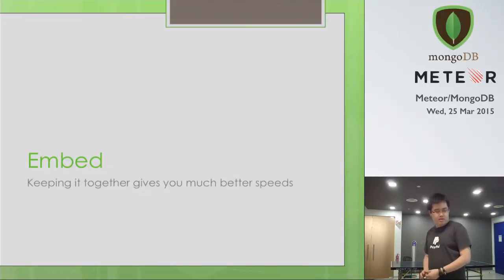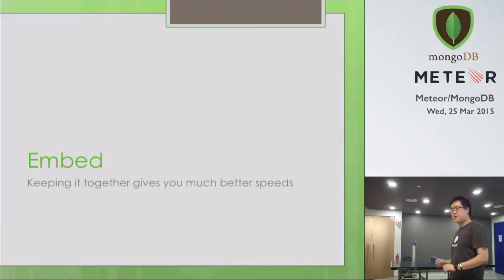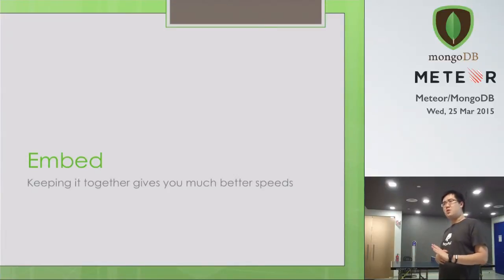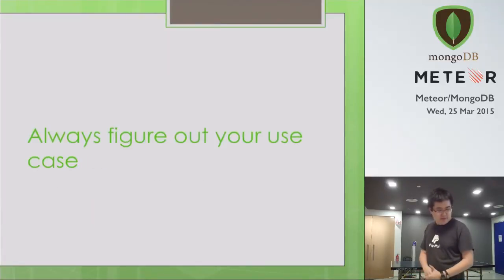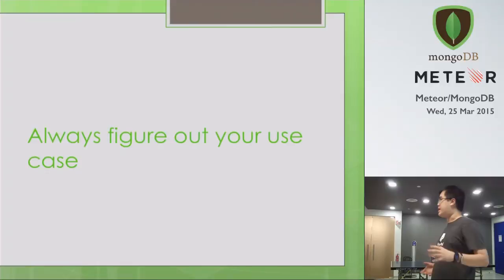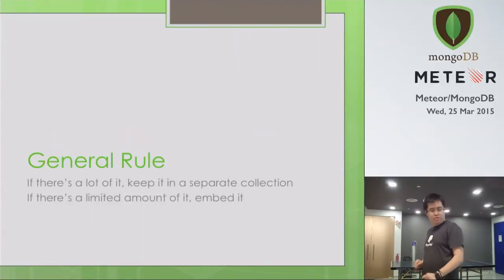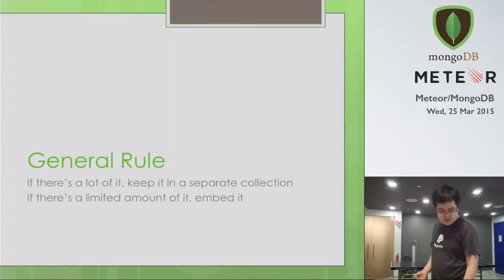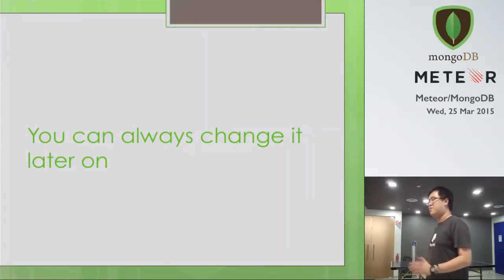On the other hand, if you use embedding, it gives you much better speeds when you query for data because you get a whole chunk out in one shot. One thing people mention about embedding being bad is: what if you have so many comments that it's more than 16 megabytes? My response to that is always that the whole of one of Shakespeare's longest works is five megabytes, so text is not a lot of data. Always figure out your use case: if you're going to grab the data individually a lot, use references. If you're going to grab the data as a whole all the time, use embedding. And the great thing about MongoDB is you can always change it later — just write a couple of migration scripts.